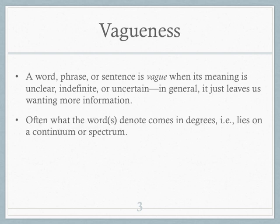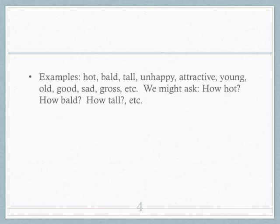Often, what the word denotes comes in degrees — it lies on a continuum or a spectrum. For example, take these words: hot, bald, tall, unattractive, unhappy, young, old, good, sad, gross.